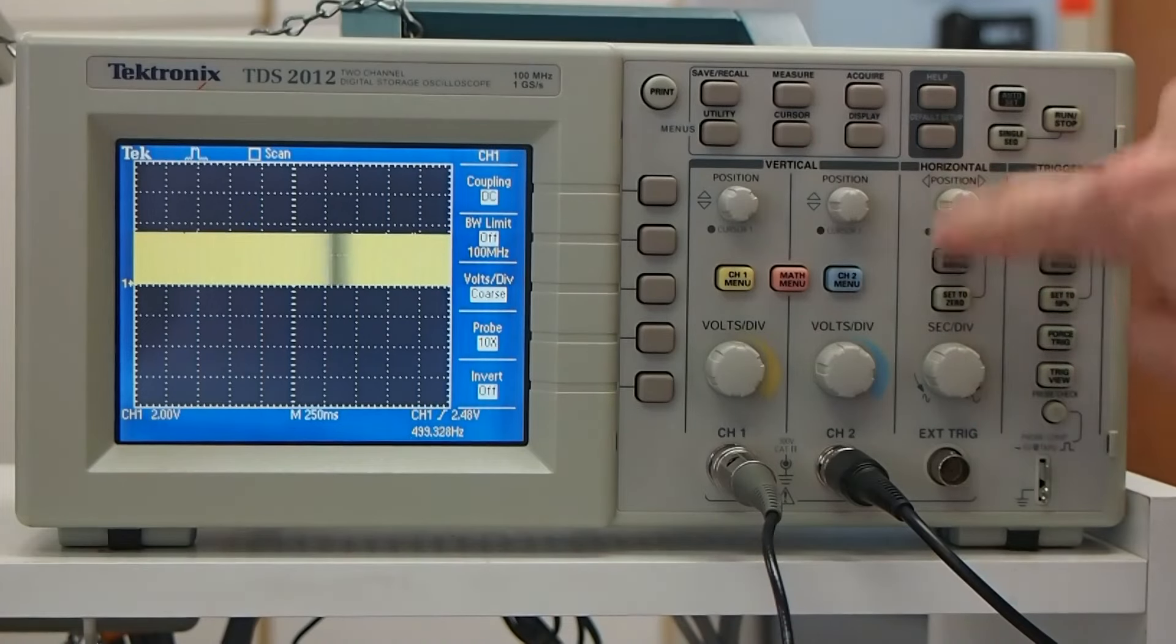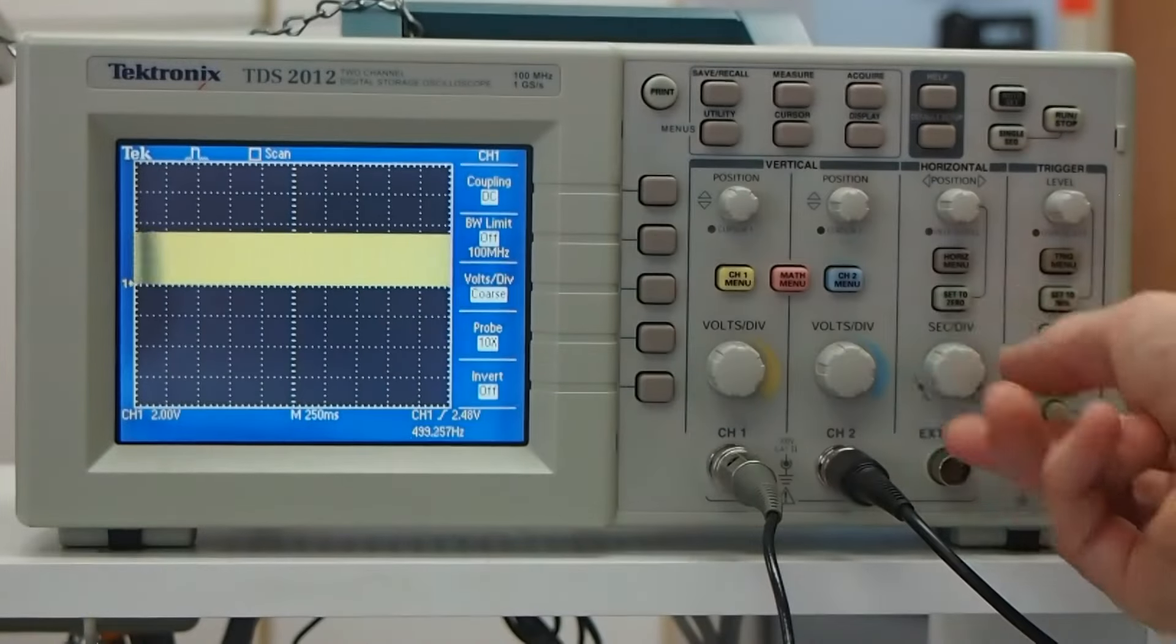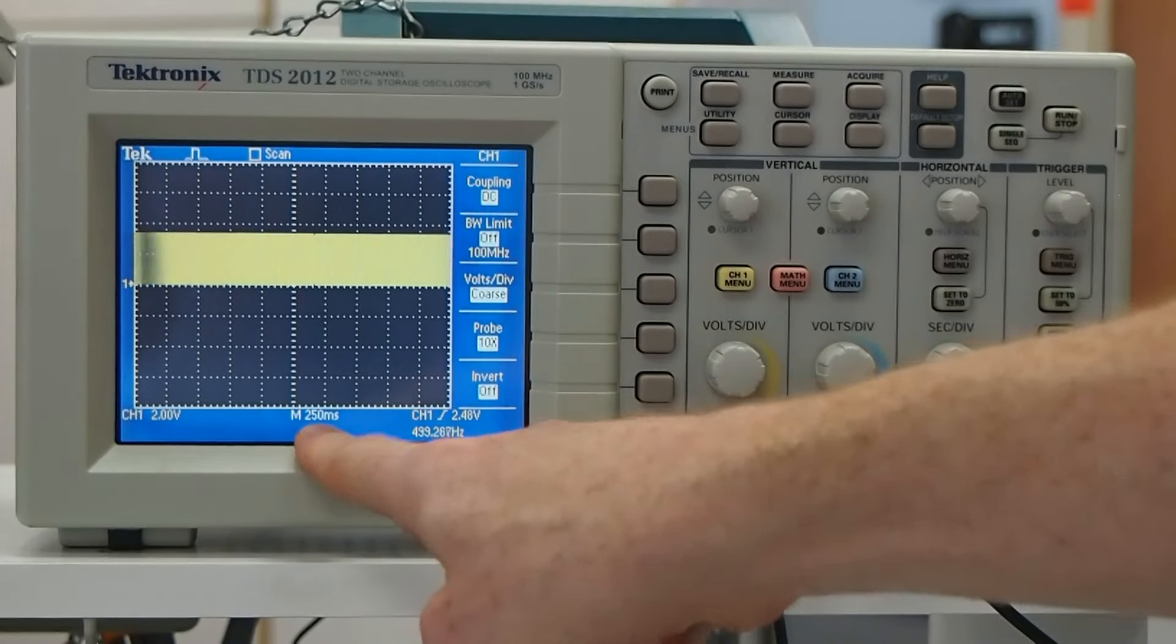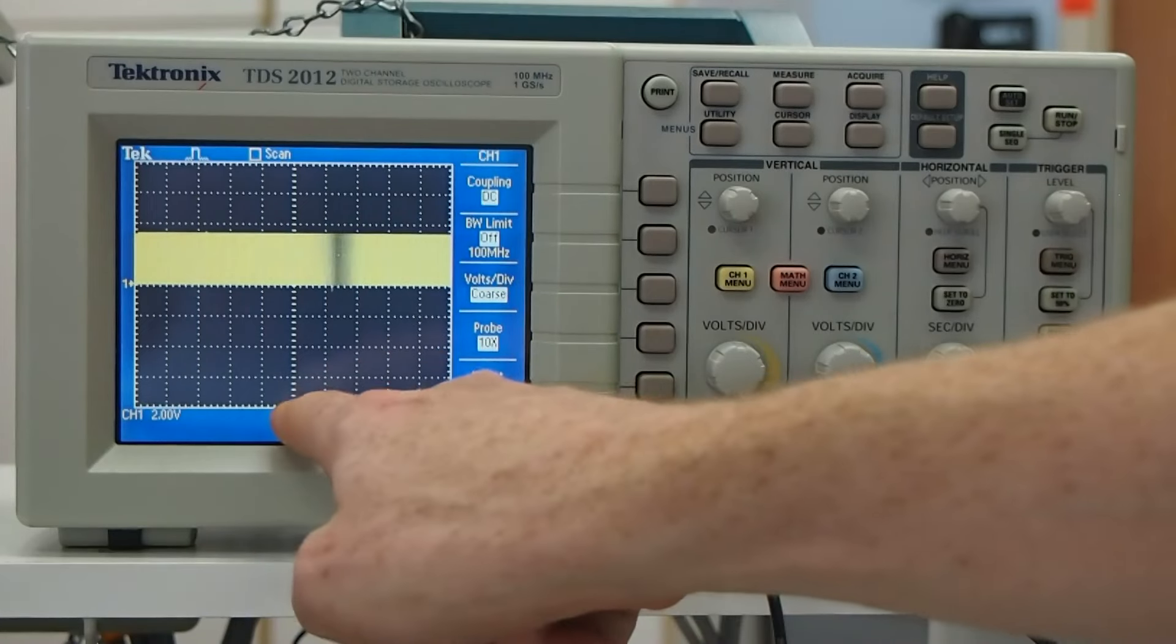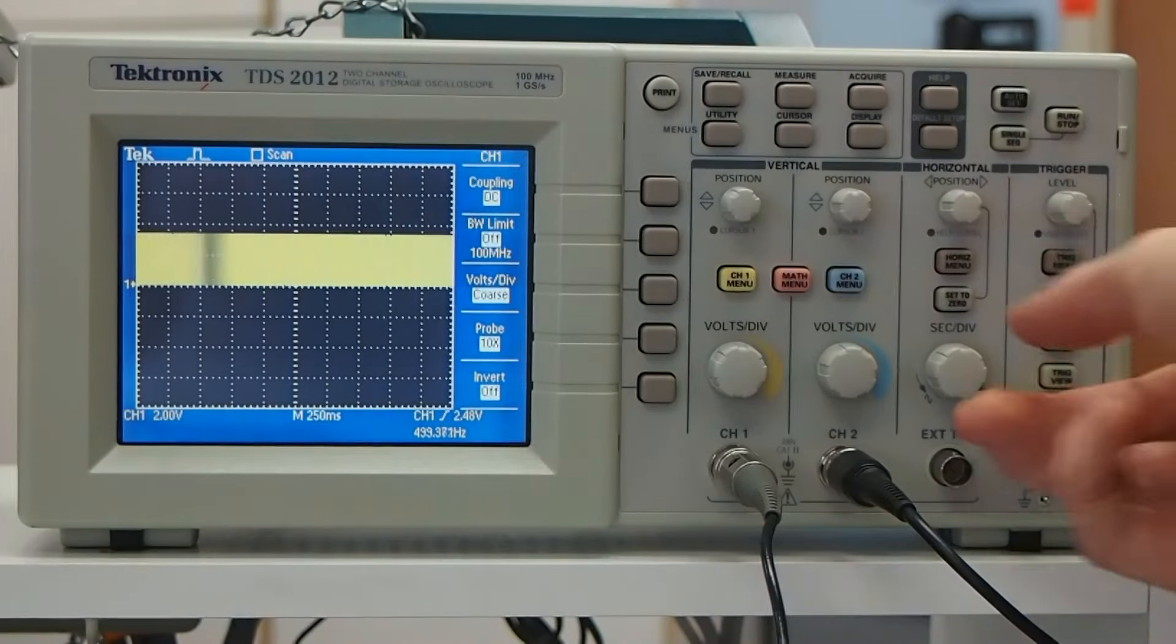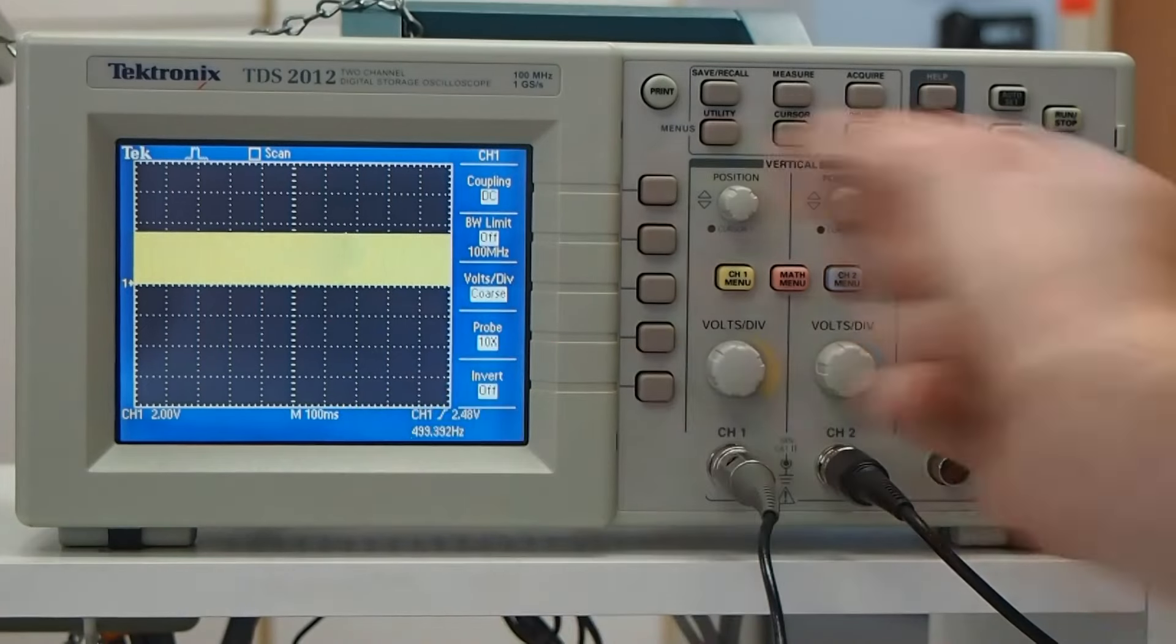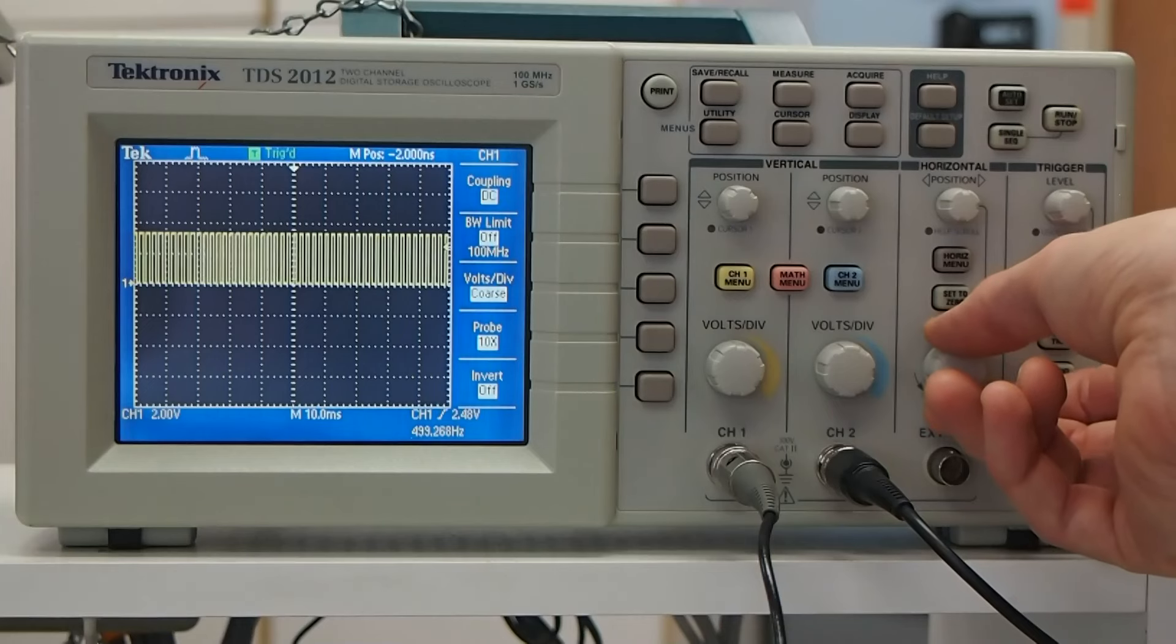Okay, then the horizontal controls, the important one we're going to use here is the horizontal scale. So this is going to just change the x-axis scale, the time scale. Right now, it says 250 milliseconds per box, per division. So say four boxes here would be one second. And we can control that just by changing the knobs. So let's zoom in. So now this is 100 milliseconds per box, 50 milliseconds per box, 25 milliseconds per box. Let's keep going.